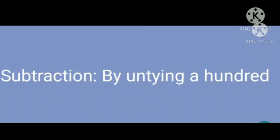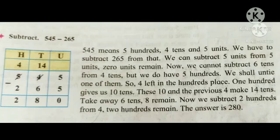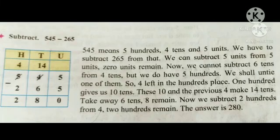Subtraction by untying a 100. Subtract 545 minus 265. 545 means 5 hundreds, 4 tens and 5 units. We can subtract 5 units from 5 units — 0 units remain. Now we cannot subtract 6 tens from 4 tens. We have 5 hundreds, so we shall untie 1 of them. 4 hundreds remain in the hundreds place. That 100 gives us 10 tens. This 10 and the previous 4 make 14 tens. Take away 6 tens — 8 tens remain. Subtract 2 hundreds from 4 hundreds — 2 hundreds remain. The answer is 280.